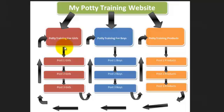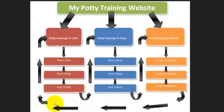Another benefit of siloing is that when you have powerful PR links coming into your main page or website, that link juice passes down into your siloed pages and into your post pages. If you do proper keyword research, those pages will show up in search. You can see how the link juice flows through each of the sites, thereby helping you rank for a lot of your content.